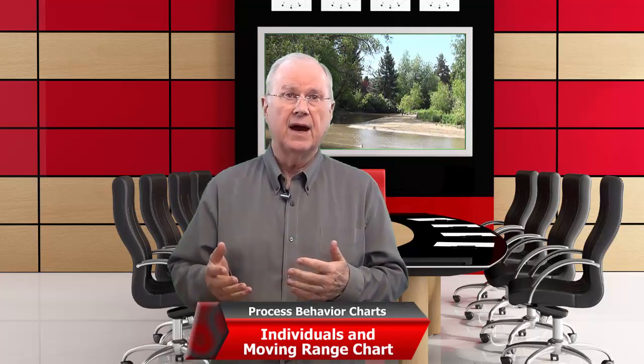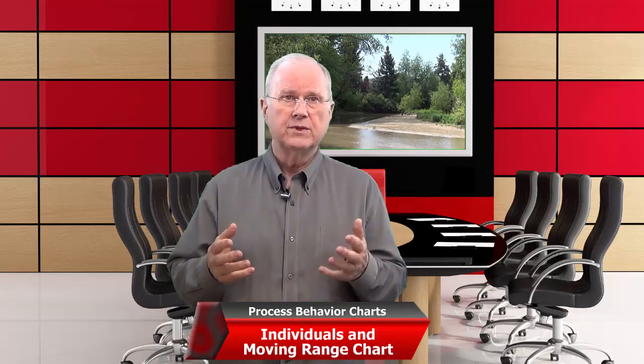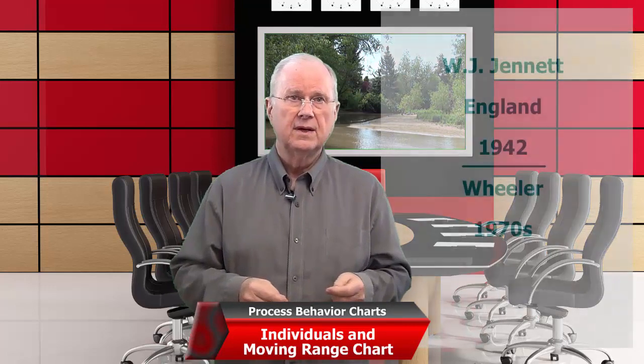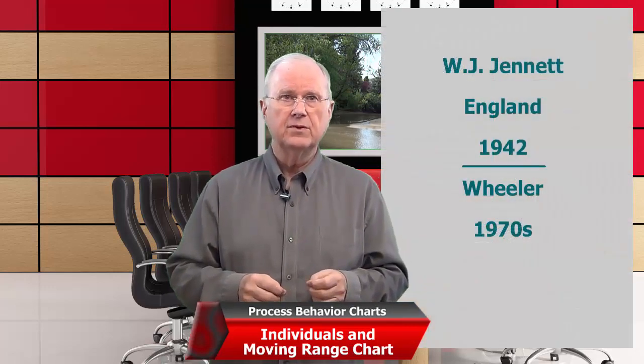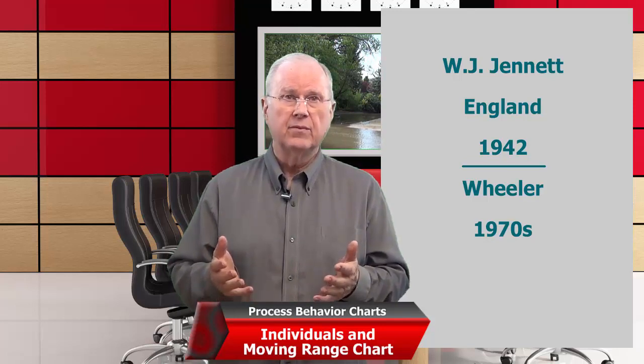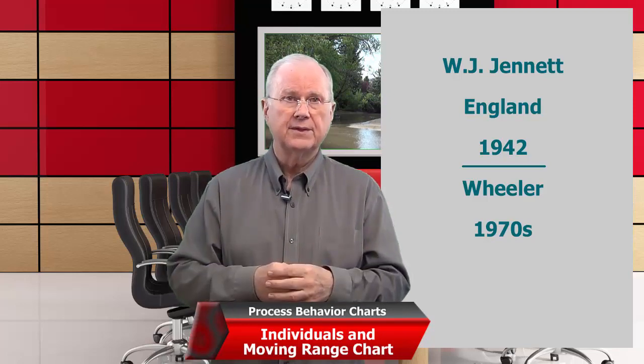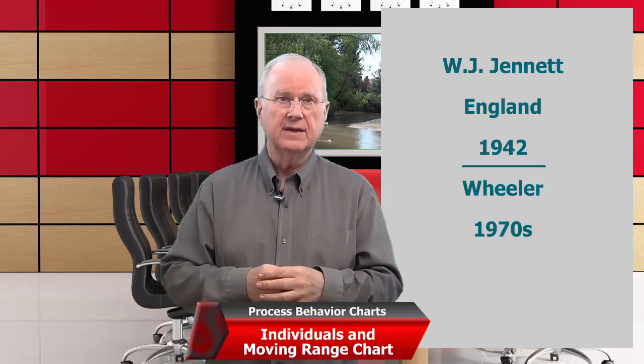Sometimes we call that the I and MR chart. Don Wheeler, who's one of the world's experts on the topic, prefers the title XMR, and both of those work perfectly well. The I and MR chart was not the first chart developed, but it's probably the most widely used. It was attributed to W.J. Jeannette in England in 1942, and it really was not very widely used until Wheeler did a lot to popularize it in the 1970s.